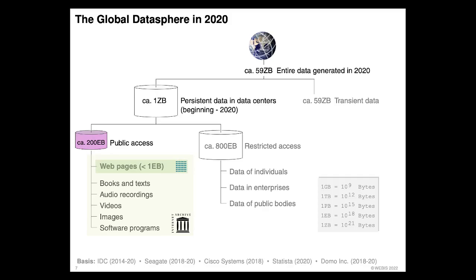The web pages highlighted here in green are what concerns us. We are not so much interested in the others, albeit of course there being lots of text data in books as well, which would also be interesting — but we focus on web pages right now. This is what the Webis group does.